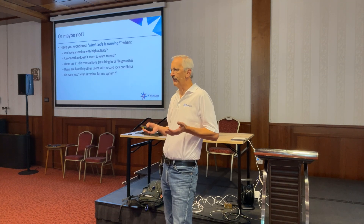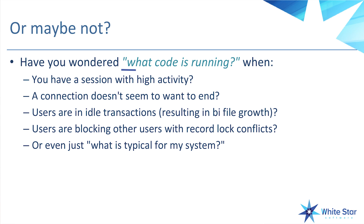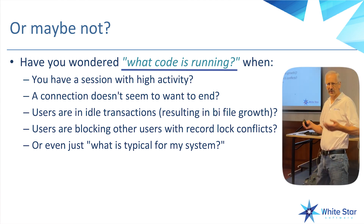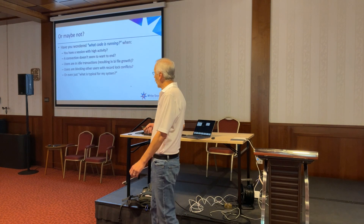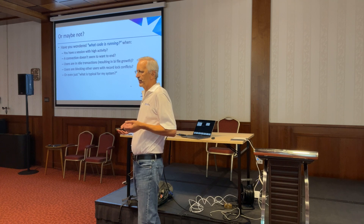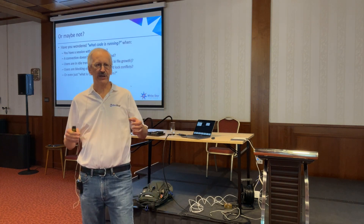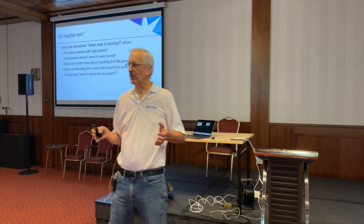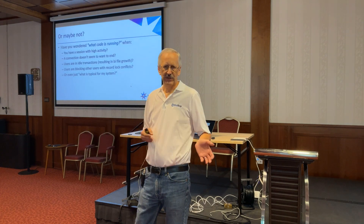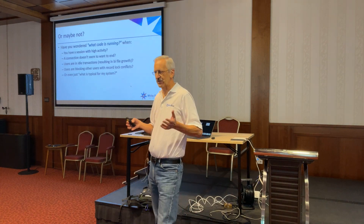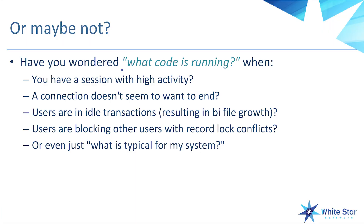That's really what you need to know so that you can go back to development and say, this is where you need to make some changes. Or you have a connection that doesn't seem to want to stop — it's just going and going and going. Or maybe you have some users that are in idle transactions and the BI file is growing and growing. You're wondering: how did they get there? What are they doing? What code is driving this little problem?